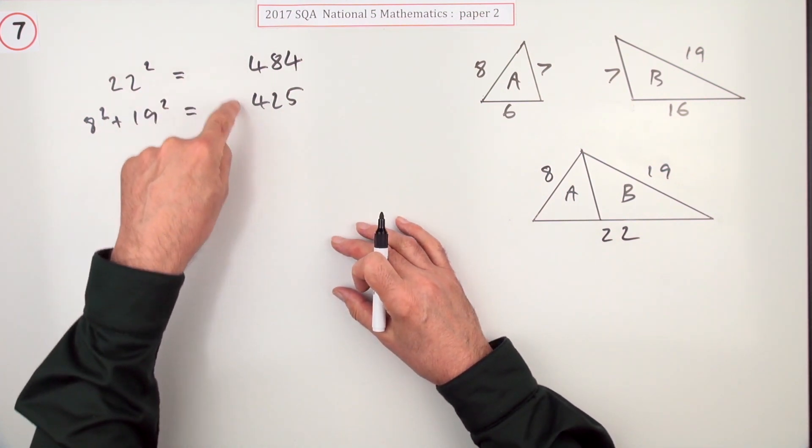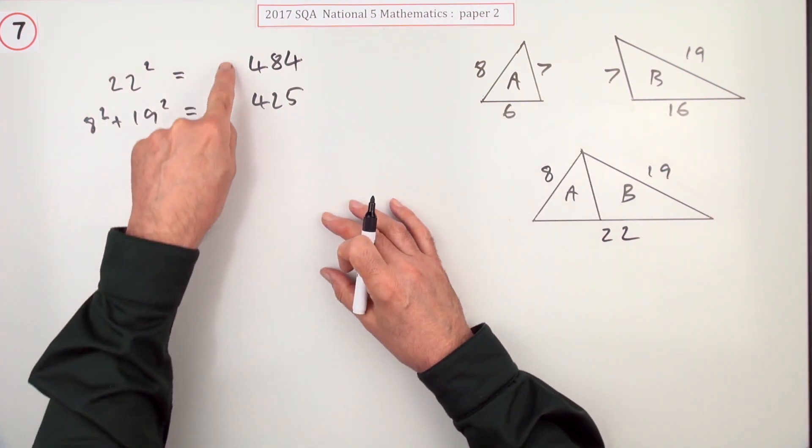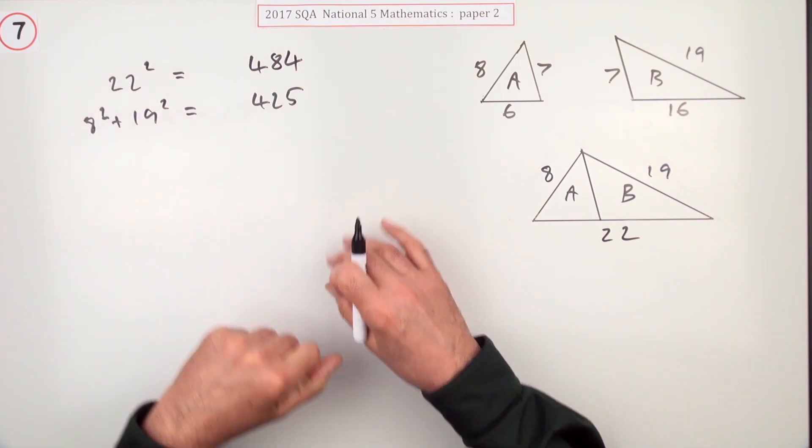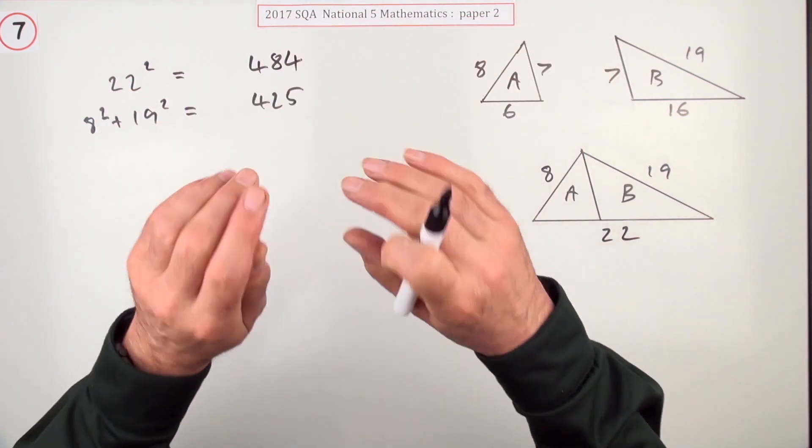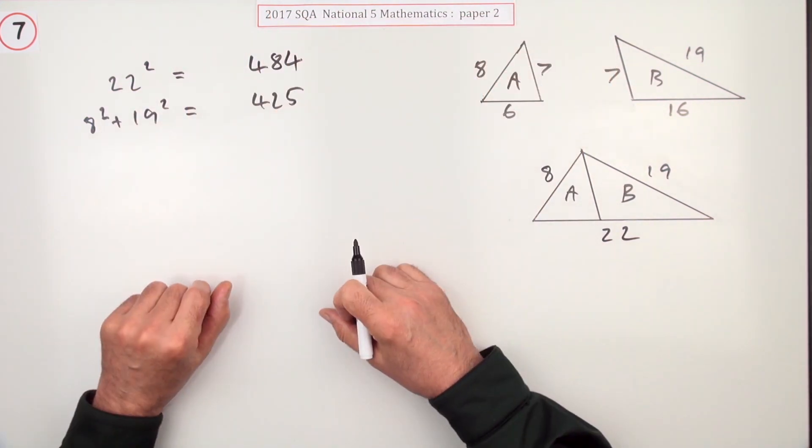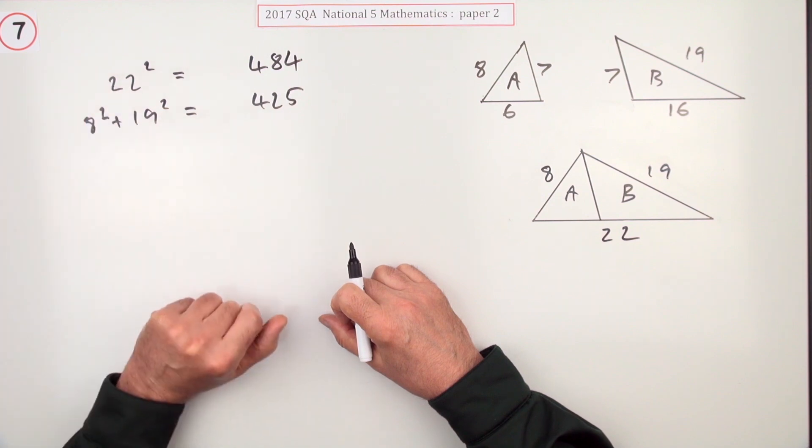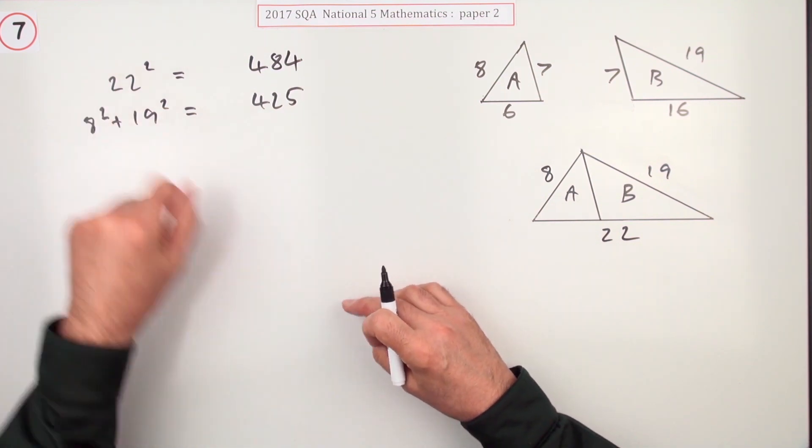Now you can make your comparison to see whether Pythagoras worked or not. But first, just this business about automatically going for your calculator. Yes, it's a calculator paper so that's what you would do, but in general, when you look at 22² you probably just see 22 and press the square button.